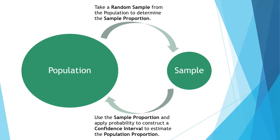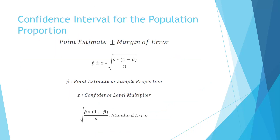So what exactly is a confidence interval? A confidence interval is really just a point estimate plus or minus a margin of error. The formula is p-hat plus or minus z times the square root of p-hat times 1 minus p-hat all over n. Each part has a specific name: p-hat is the point estimate, also called the sample proportion; the z value is the confidence level multiplier, which comes from a table; and the square root of p-hat times 1 minus p-hat over n is the standard error — it estimates the variability of the sample.